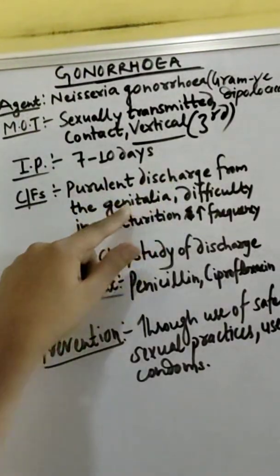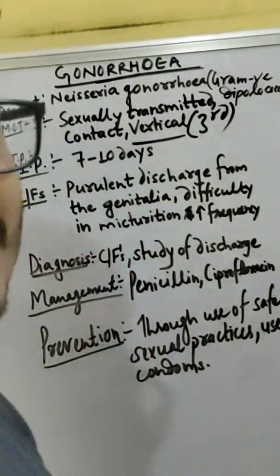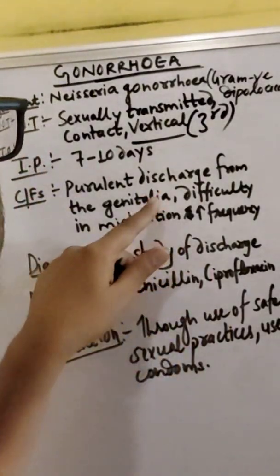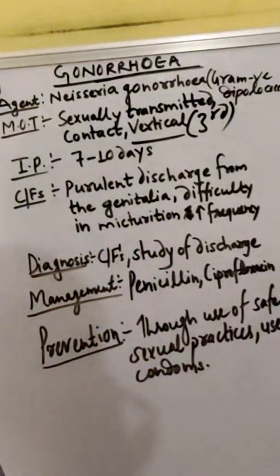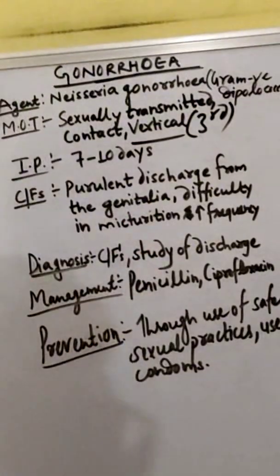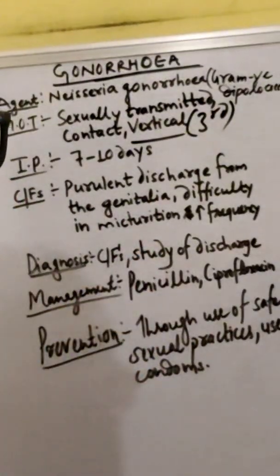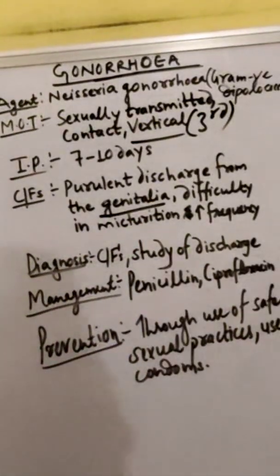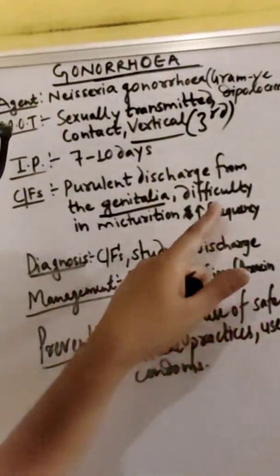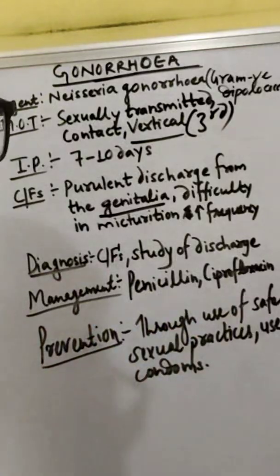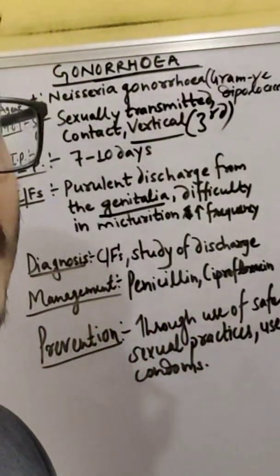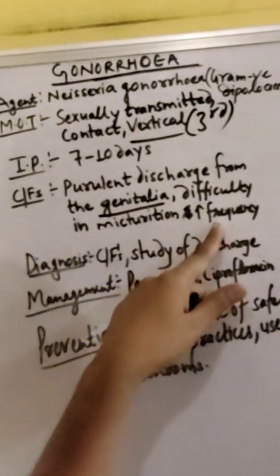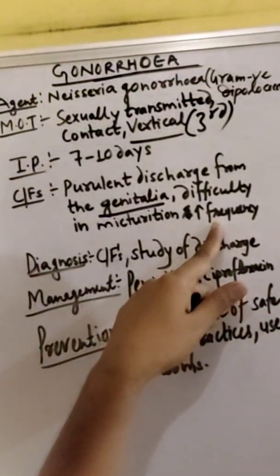Purulent discharge from the genitalia — the discharge will occur from the reproductive parts of both male and female. There is also difficulty in micturition, meaning urination problems, and an increased frequency of urination.